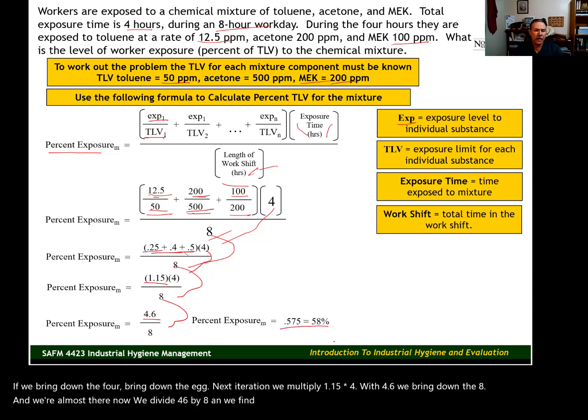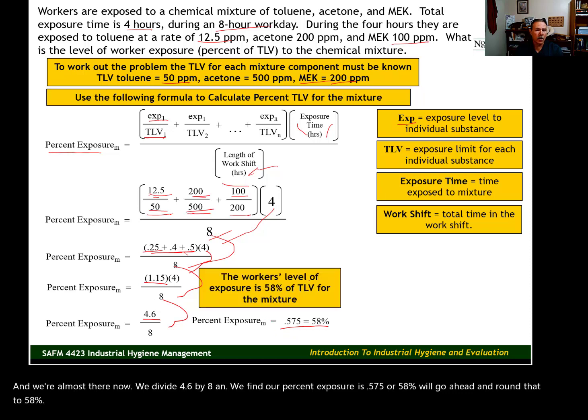We're almost there. Now we divide 4.6 by 8, and we find our percent exposure is 0.575, or 58%. We'll go ahead and round that to 58%. The workers' level of exposure is 58% of the TLV for the mixture.